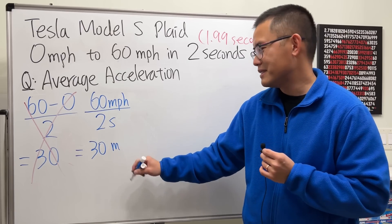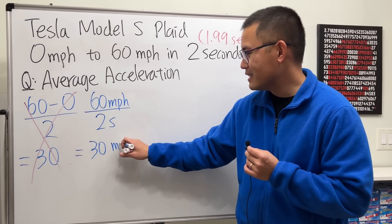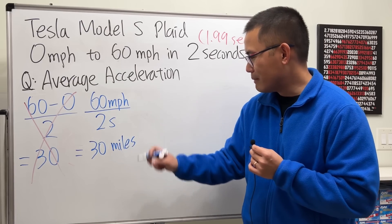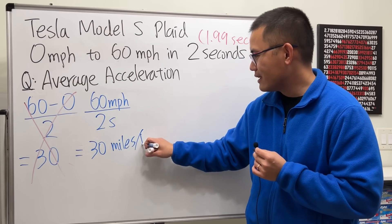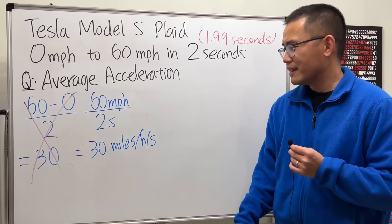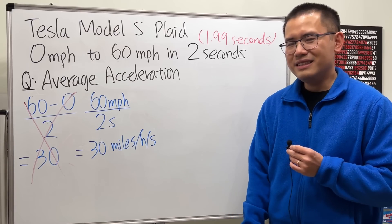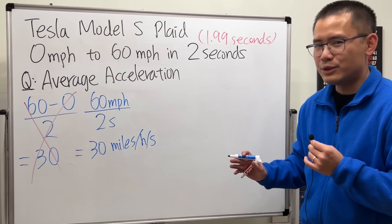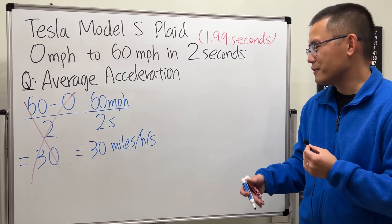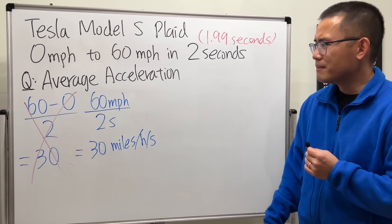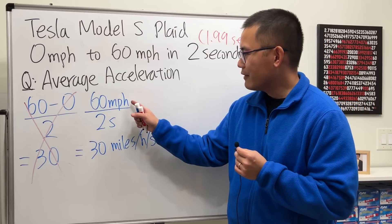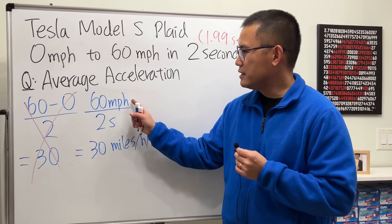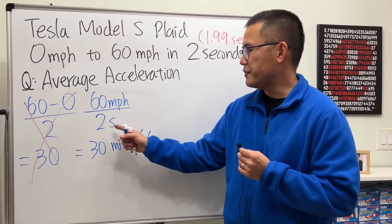P stands for per which is like the division bar. You can write it like this but don't write down m because m usually stands for meters. So spell that out: miles per hour per second. If you put it down like this it's technically okay but nobody really does it.